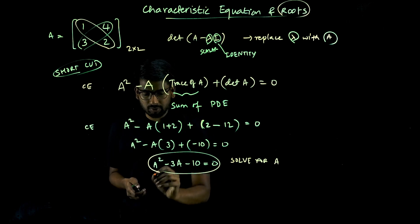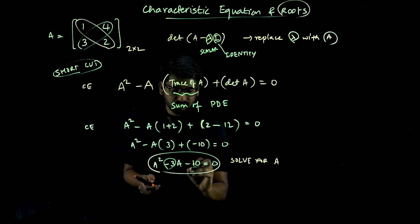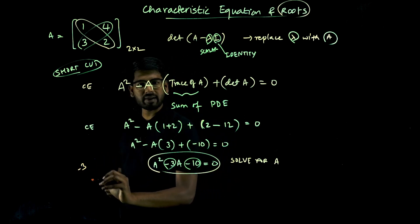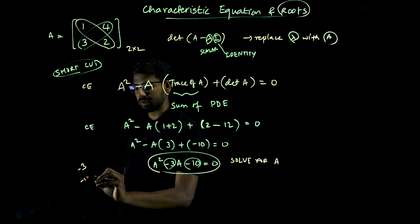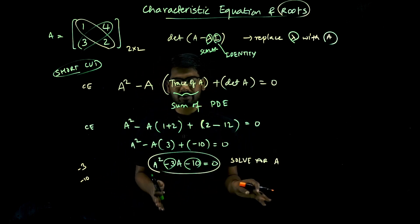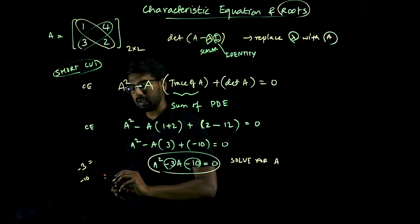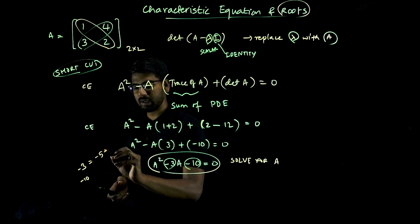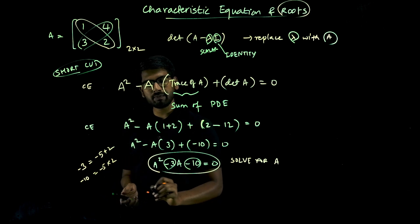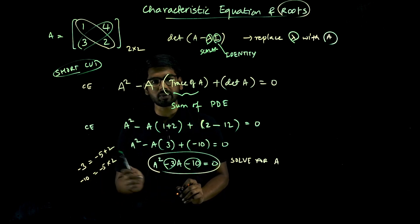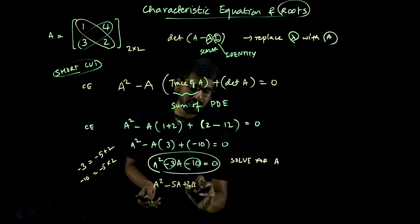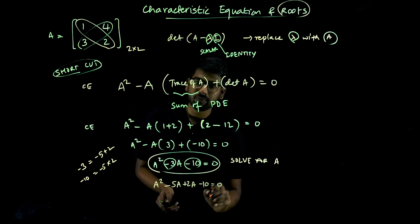I will use factorization. There is minus 3 here and minus 10 here. We need two numbers whose sum is minus 3 and product is minus 10. That gives minus 5 and plus 2: minus 5 plus 2 equals minus 3, and minus 5 times 2 equals minus 10. So I can write this as lambda squared minus 5 lambda plus 2 lambda minus 10 equals zero.